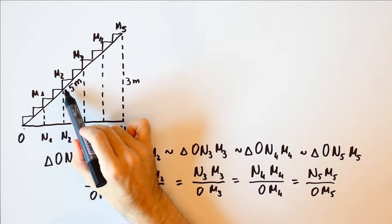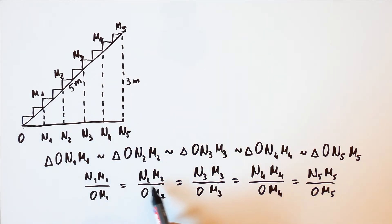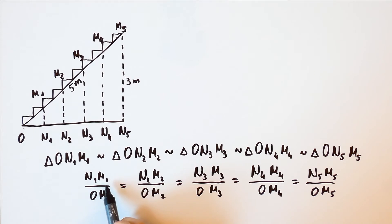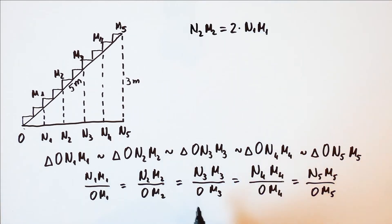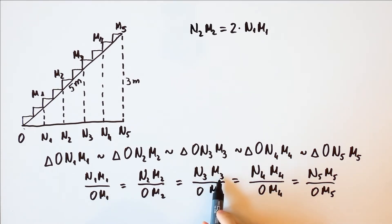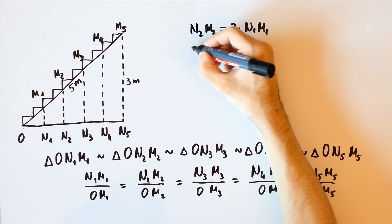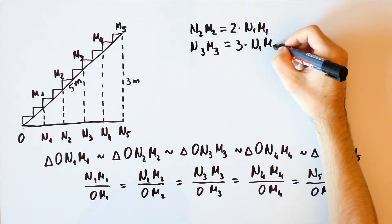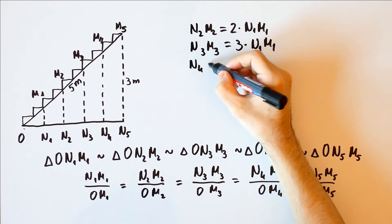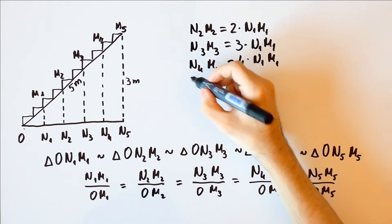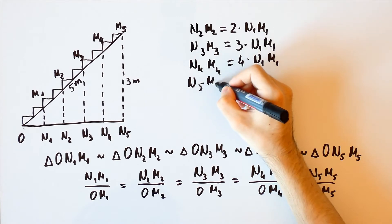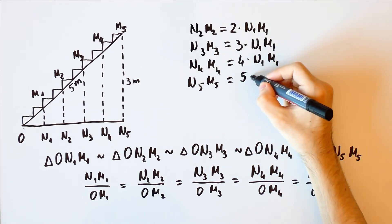Since O-M2 is 2 times O-M1, N2-M2 will also be 2 times N1-M1. Similarly, O-M3 is 3 times O-M1, so N3-M3 will be 3 times N1-M1. And N4-M4 is 4 times N1-M1, and N5-M5 is 5 times N1-M1.